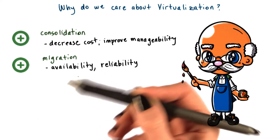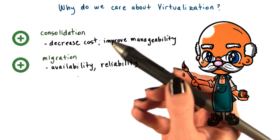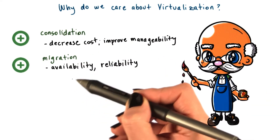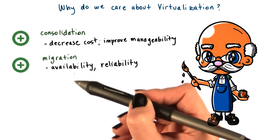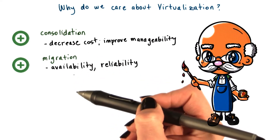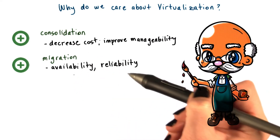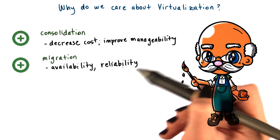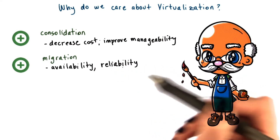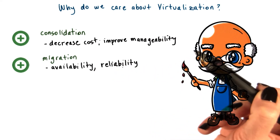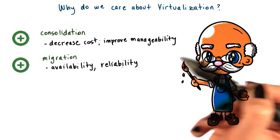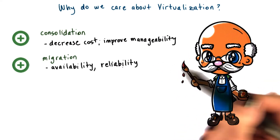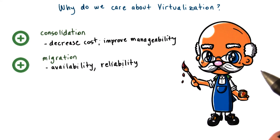For instance, if we have an increase in the load, we can just create multiple VMs and address that issue, so increase the availability of the system. And also to provide solutions that improve reliability. For instance, if we detect that a particular hardware node is getting hot and likely will fail, we can just migrate those VMs onto some other physical nodes.